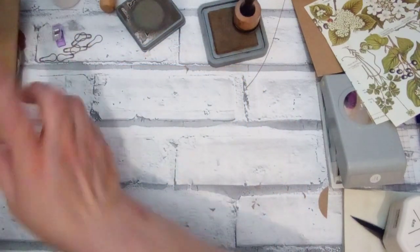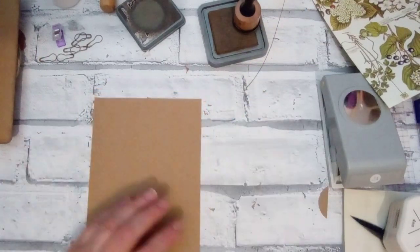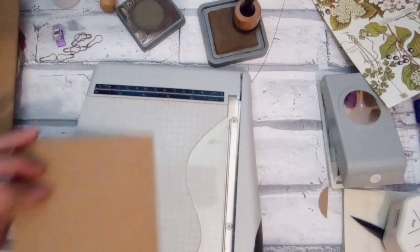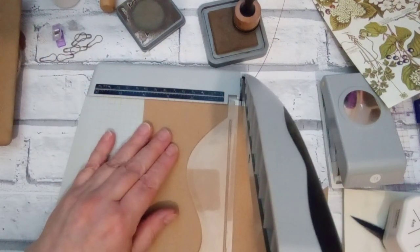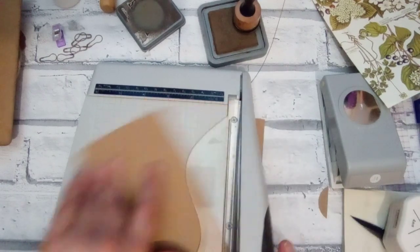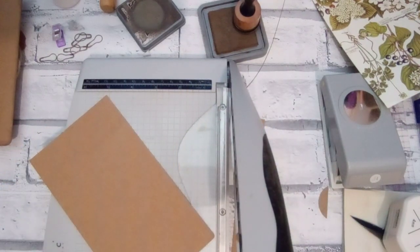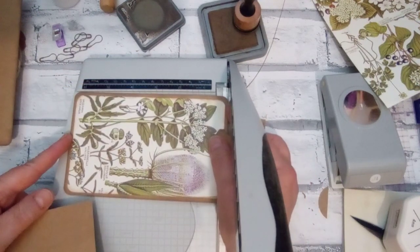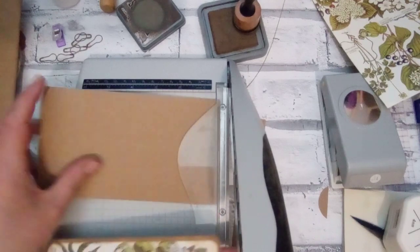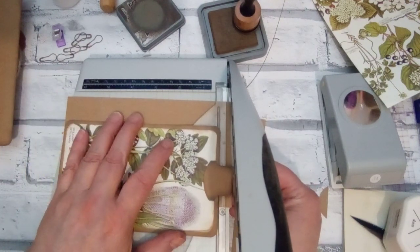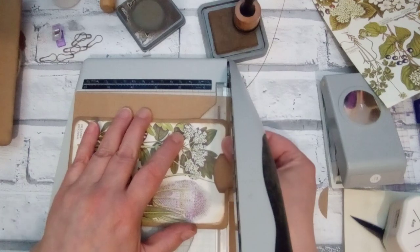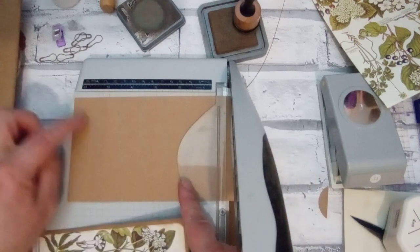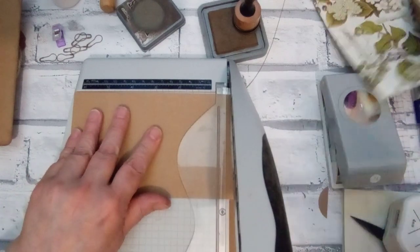So that's my front. That's my pocket. Now while that dries, I'm going to make the tag for the inside. I've made the tag a bit smaller so it will fit in. And I made the tag four inches wide by six and a half tall.